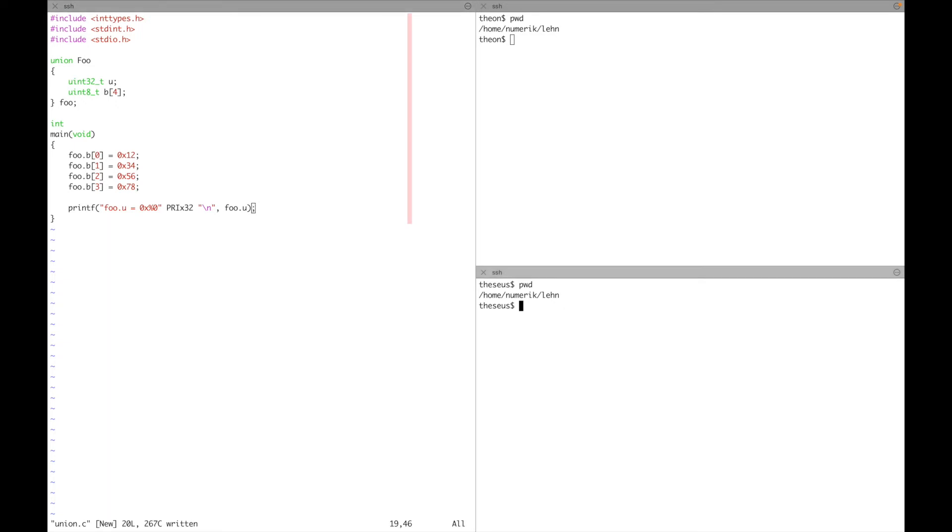And now I will first compile and run this on thesoys, which is a big endian machine, as you will see now. Here we go. And then I also compile and run this on theon. And that's a little endian machine.